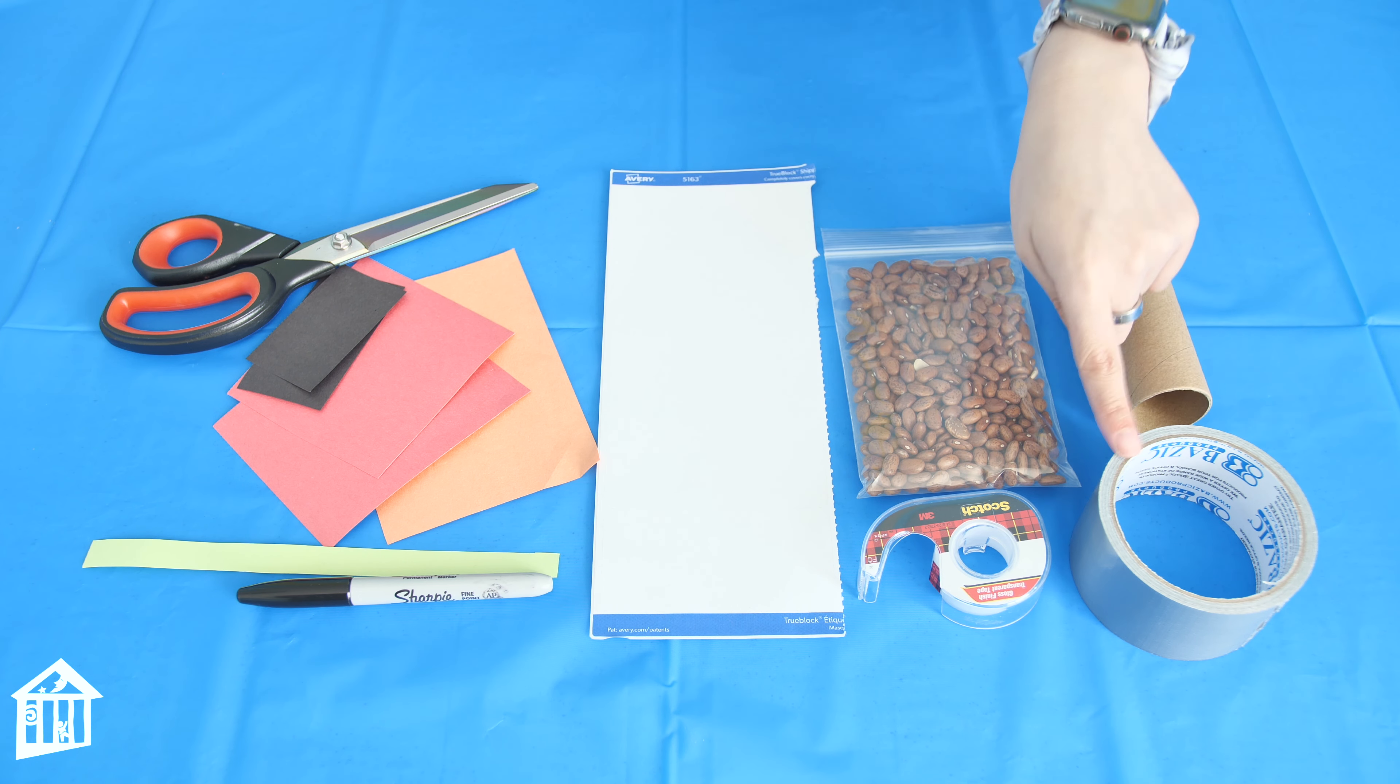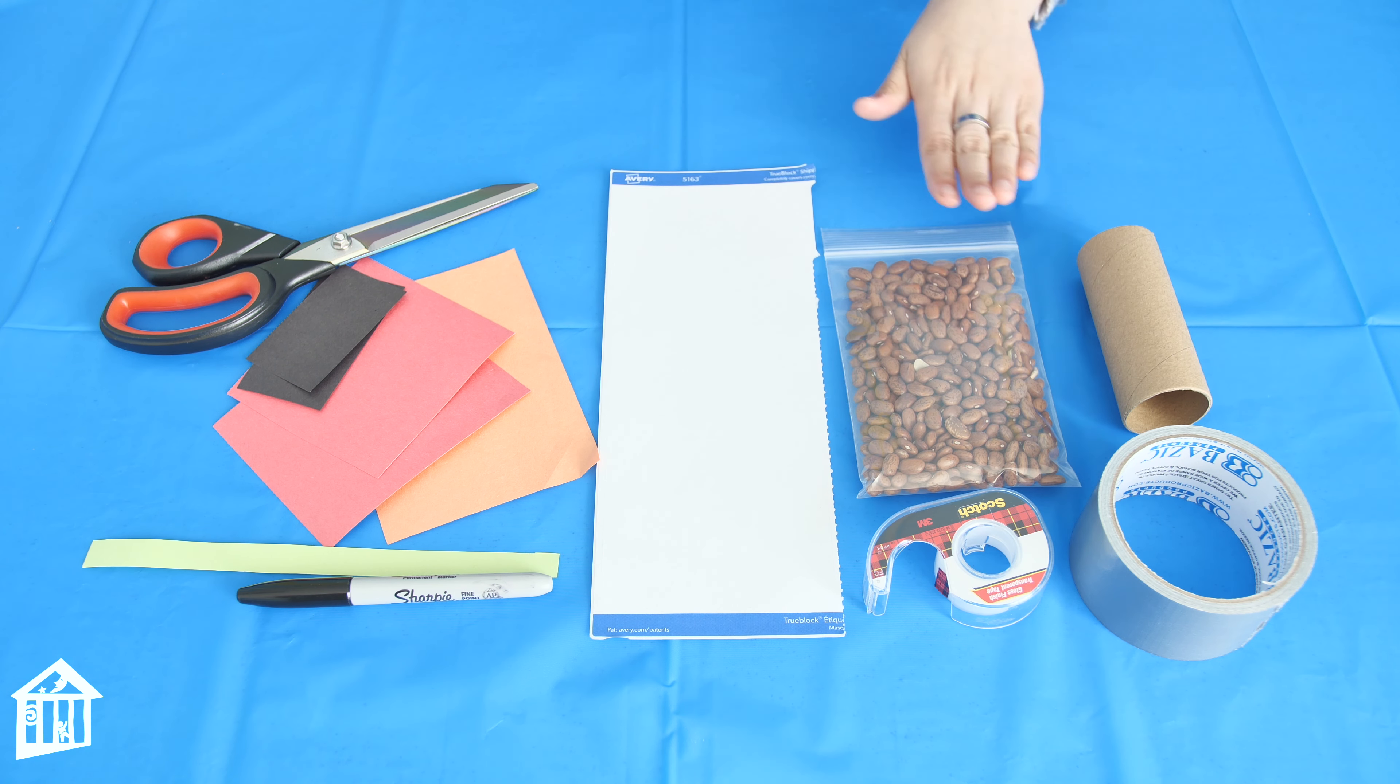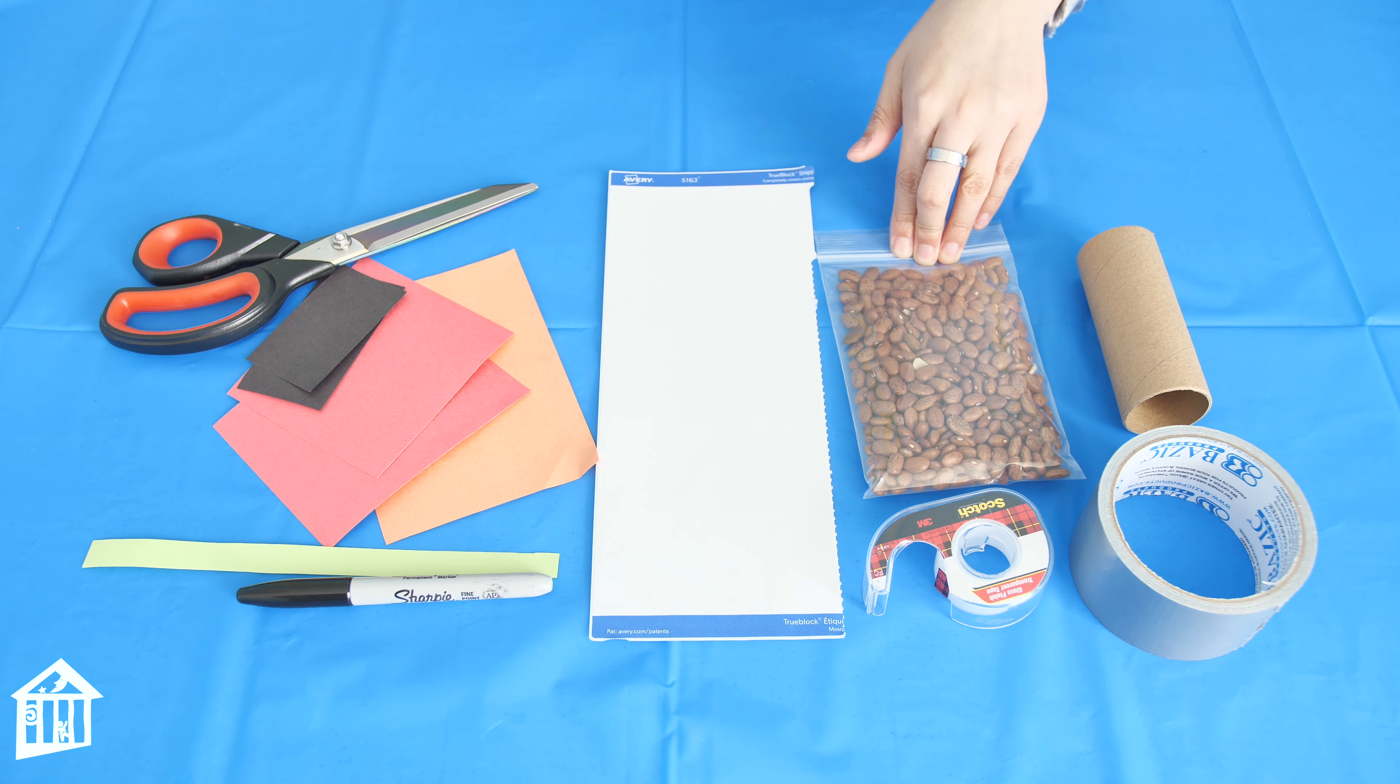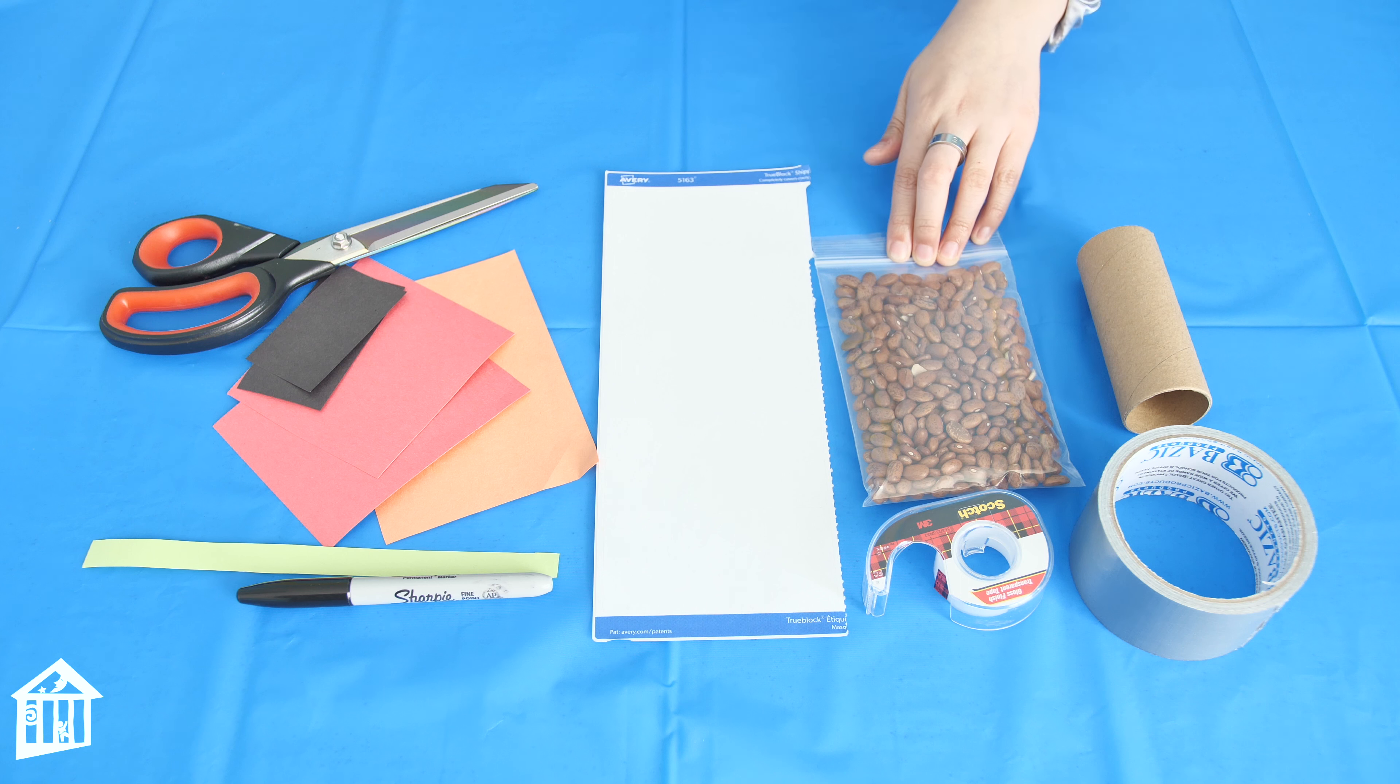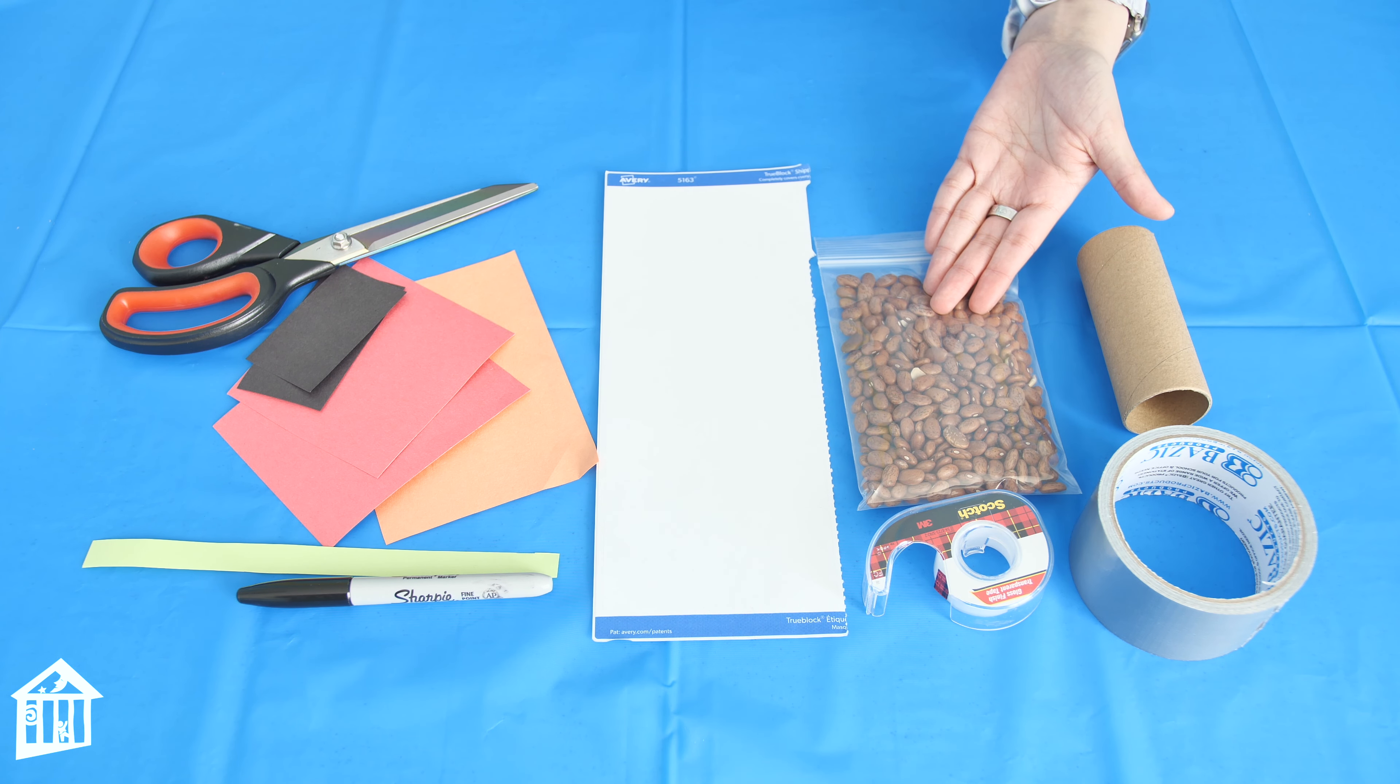These are the materials that you will need to create your snowman maraca. You need your toilet paper roll, some duct tape, some scotch tape, and some beans to make the noise for the maraca.